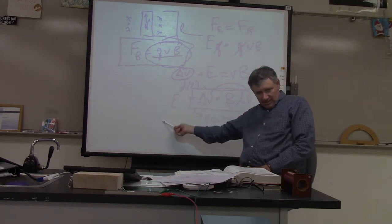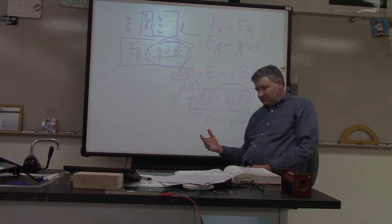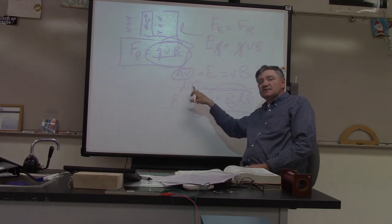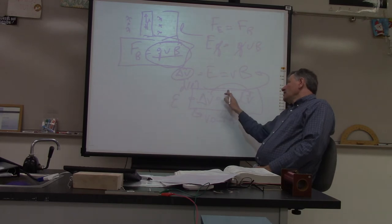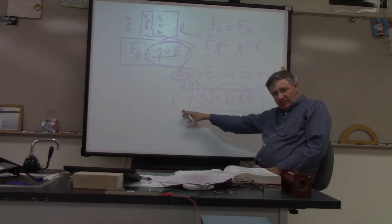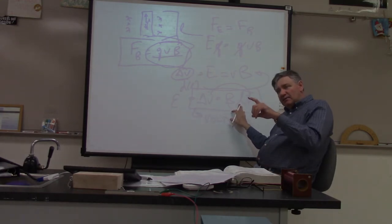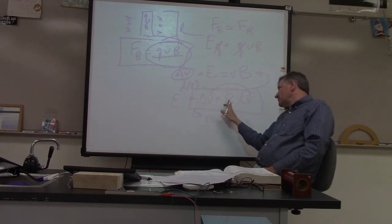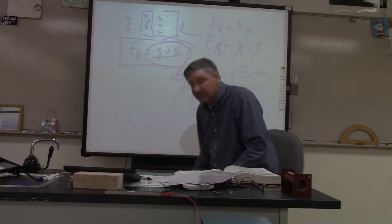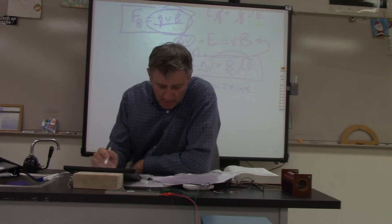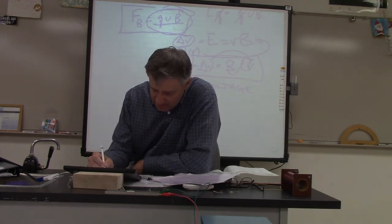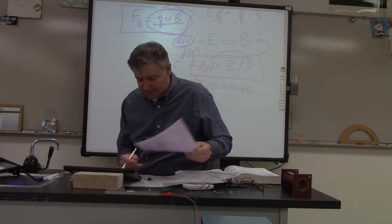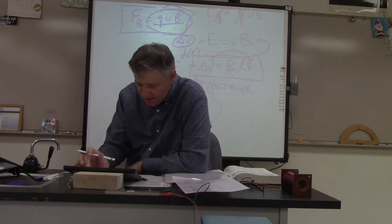Here's what's going to be important: if you don't have a magnetic field, you don't have an electromotive force — you don't have a voltage. If you don't have a length of wire, obviously you don't have it. And if you're not moving, you don't have an electromotive force either. You have to have a magnetic field, a length of wire moving in it, and a velocity to create that voltage. On your equation sheet: E equals BLV — that's the bottom right equation.